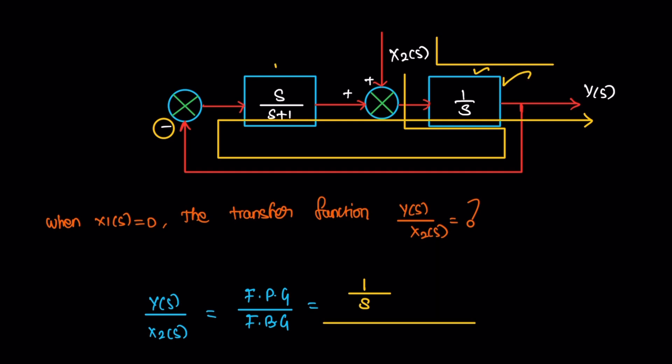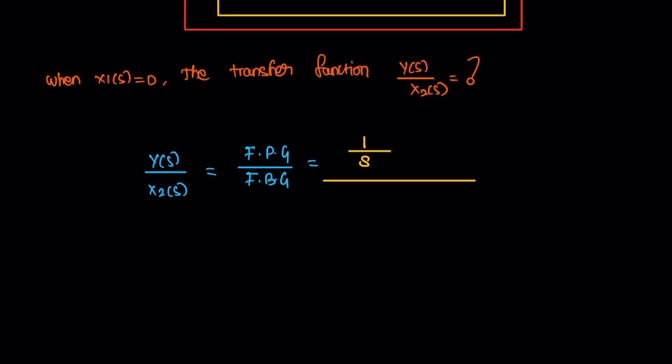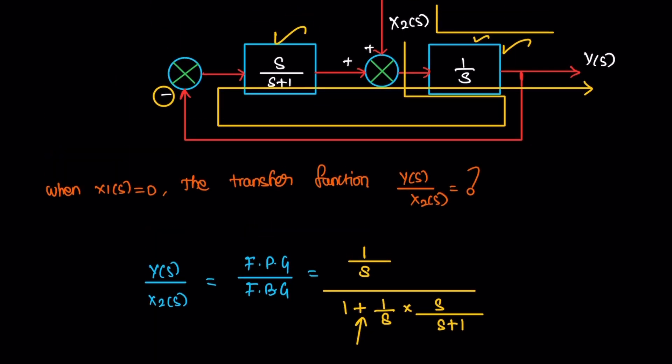Then the product of two blocks values. So 1 plus 1 by s is multiplied by s divided by s plus 1. Here it is positive. The reason, it's a negative feedback.